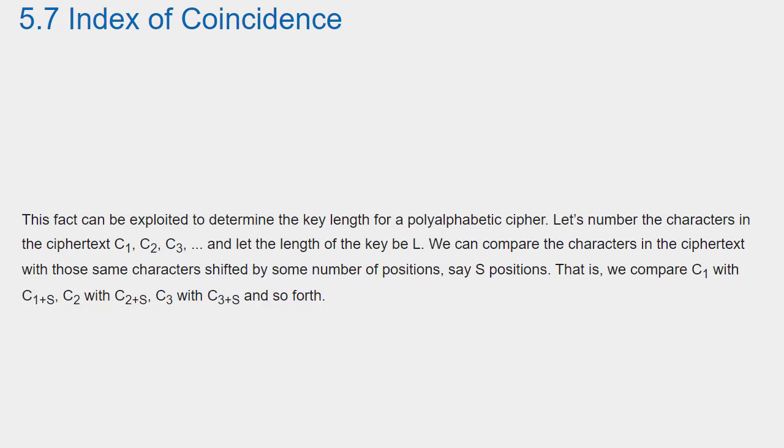This fact can be exploited to determine the key length for a polyalphabetic cipher. Let's number the characters in the ciphertext c1, c2, c3, and let the length of the key be L. We can compare the characters in the ciphertext with those same characters shifted by some number of positions, say S positions. That is, we compare c1 with c1 plus s, c2 with c2 plus s, c3 with c3 plus s, and so forth.